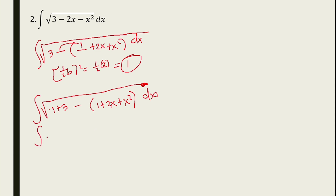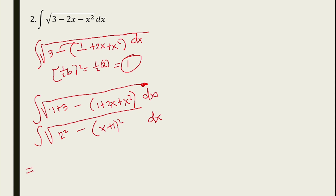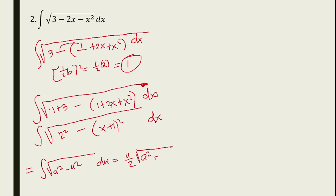Now we have the pattern. The formula is: the integral of the square root of a squared minus u squared du equals u/2 times the square root of a squared minus u squared, plus a squared over 2 times inverse sine of u/a, plus C.